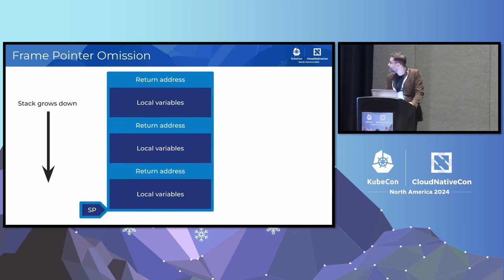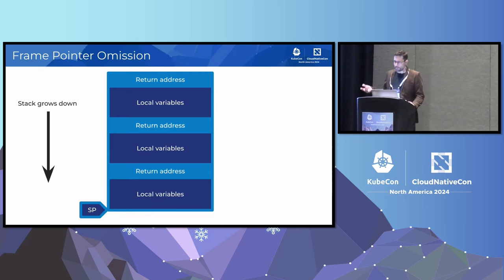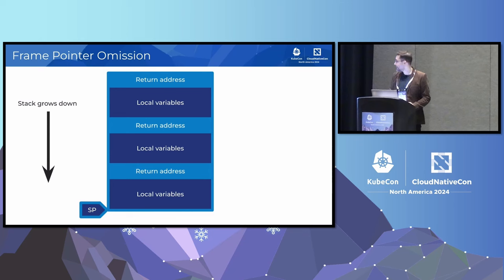Unfortunately, native code doesn't usually come with frame pointers. This is a remnant of the register-starved 32-bit x86 Intel architecture, which led compilers to use the frame pointer register as a general-purpose register. Today, AMD64 and ARM64 offer many more general-purpose registers, so there's been a recent shift towards compiling code with frame pointers in production. However, coverage will remain poor for some time as many Linux distributions don't yet support this. Without frame pointers in the stack, we have nothing to follow to get to the next frame, so we need some other mechanism to enable unwinding everywhere.